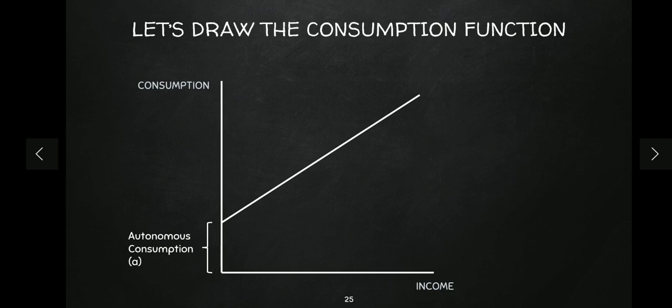That is why the consumption line does not start from the origin — it starts from the Y-intercept. The slope of the line — how steep or flat it is — depends on the marginal propensity to consume: how much percent of your income you are spending. If MPC is high, the line will be steeper, meaning consumption is growing faster. If MPC is low, the line will be flatter, meaning consumption is growing slowly. This is how the consumption line is denoted by a + bY.